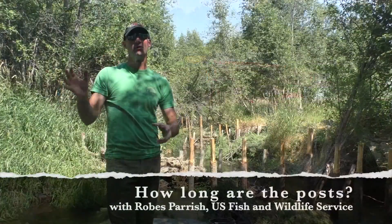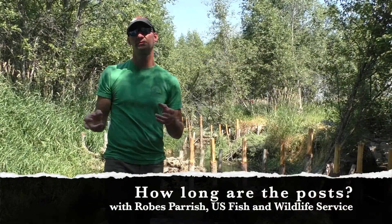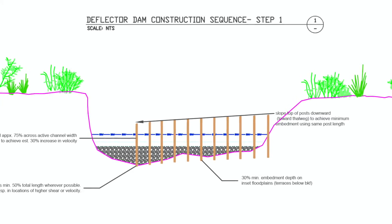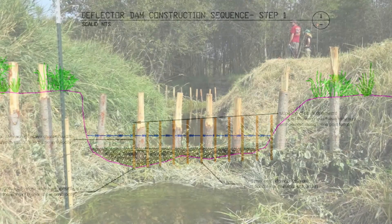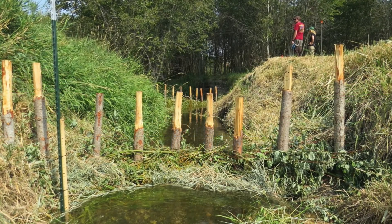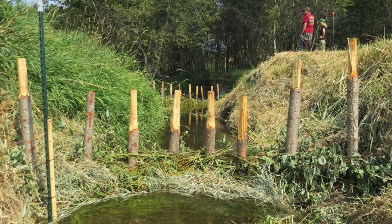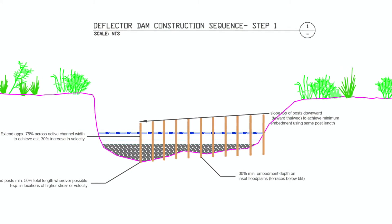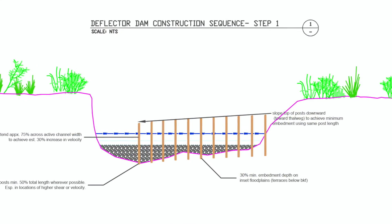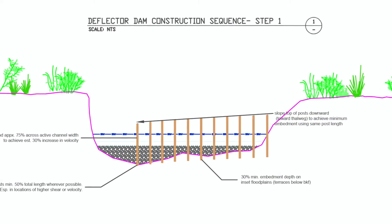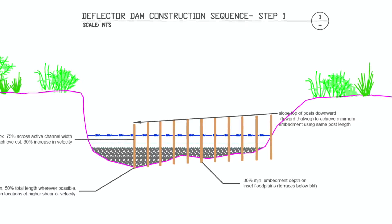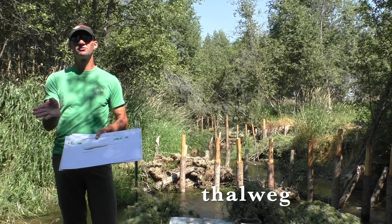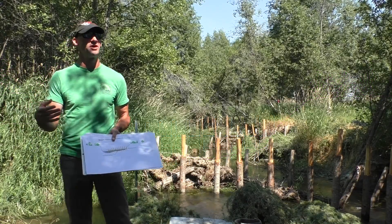We use different post lengths for different purposes. The banks are uniformly high on both sides. The deepest part of a stream — here's your cool word for the day — it's called a thalweg, T-H-A-L-W-E-G, and the deepest part of the stream is the thalweg.